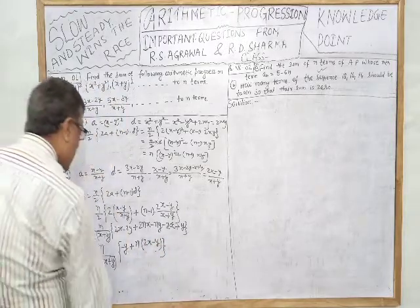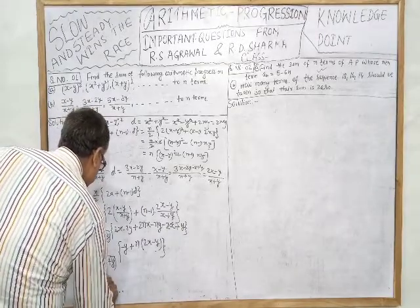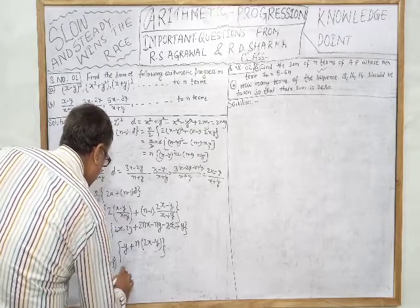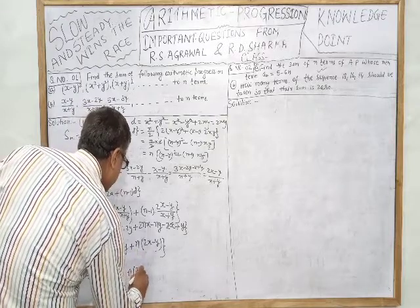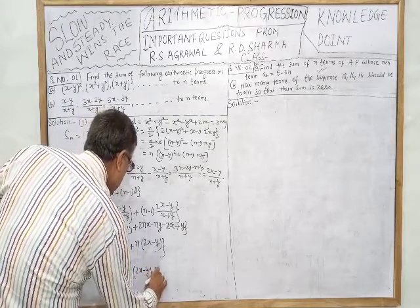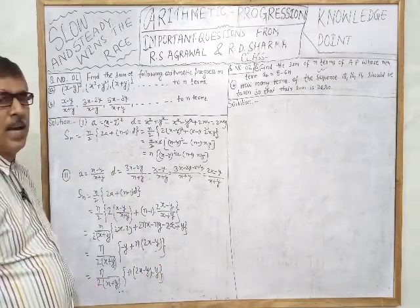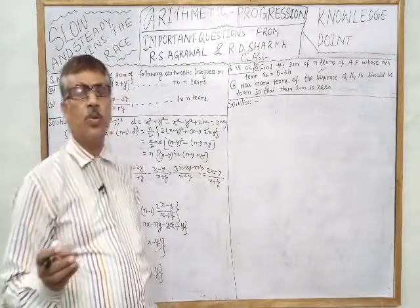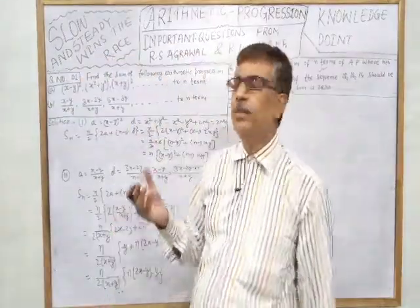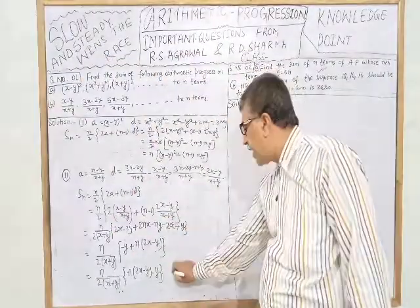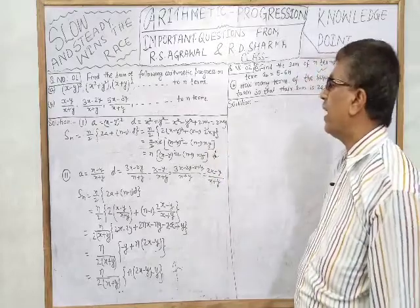So this way the answer is n/2(x+y) × [n(2x-y) - y]. This is the simplified answer for the second part of question one. Since the expression cannot be simplified further as it involves constants, this is your final answer.